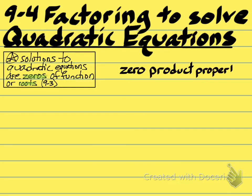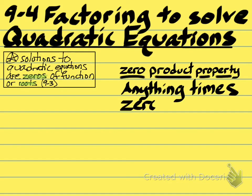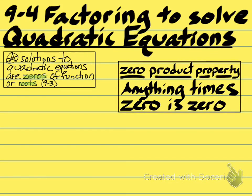What we will be using in this section is something called the zero product property. And this is something that you already know — anything times zero is zero. We've been talking about this all year. It's a property used in this section. We're going to be trying to make things multiply by zero. That's kind of the goal.